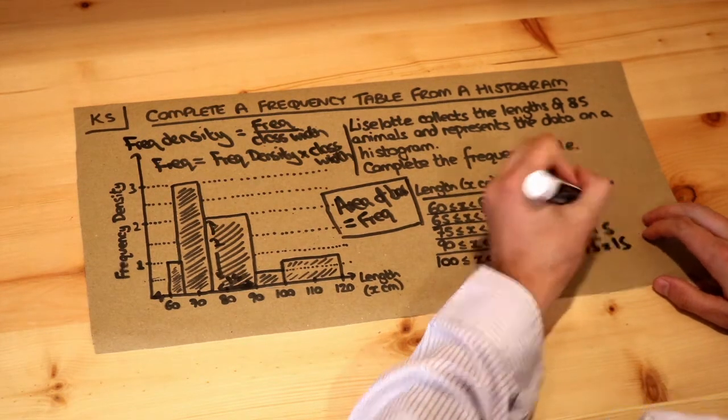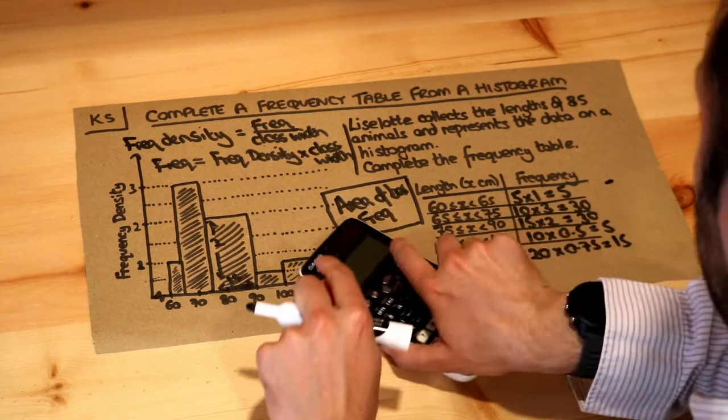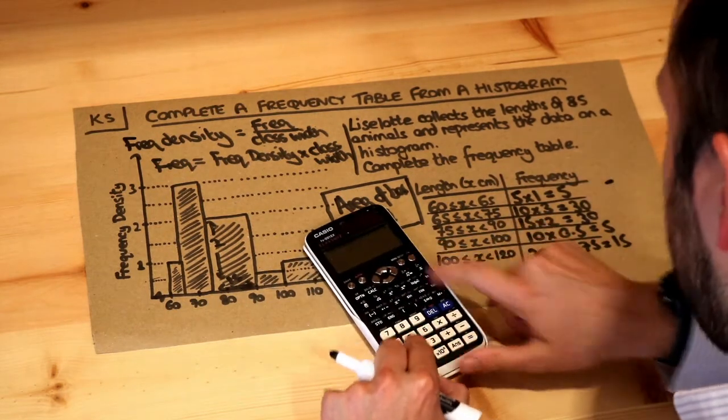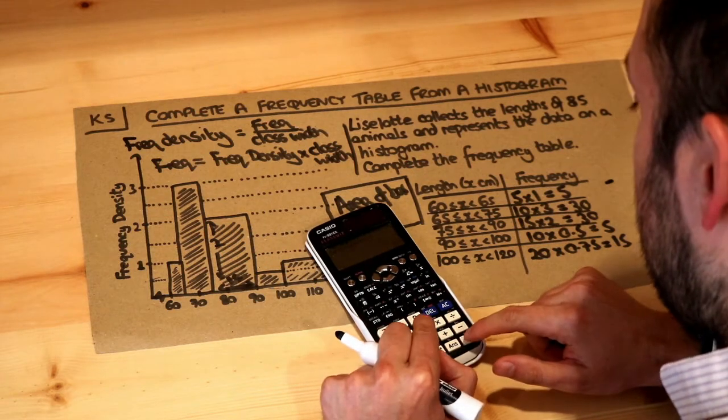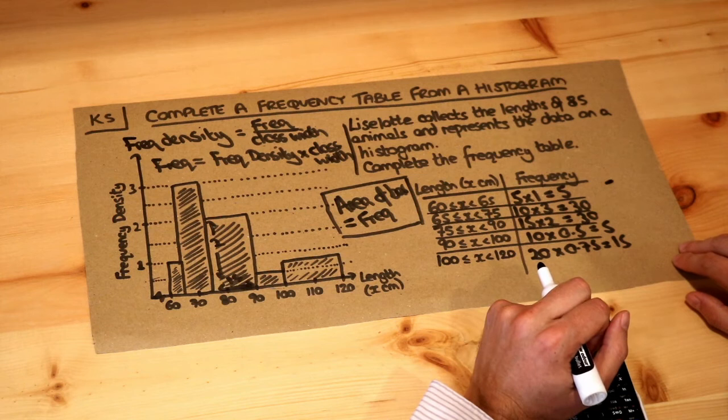That is 15. Let's just add these frequencies up to check that we do indeed get 85. So 5 plus 30 plus 30 plus 5 plus 15 equals 85. That's right, and that is it.